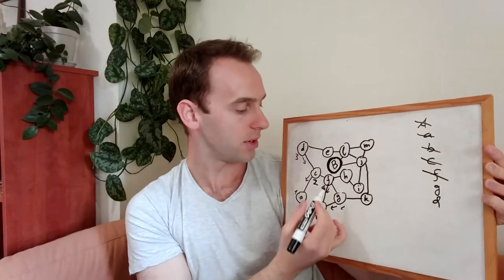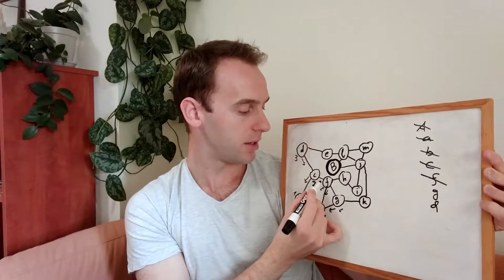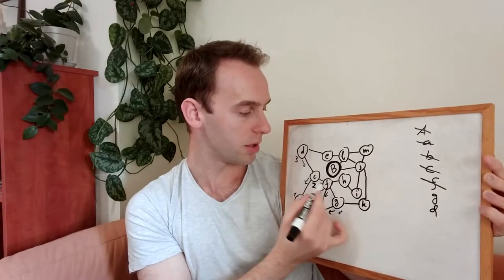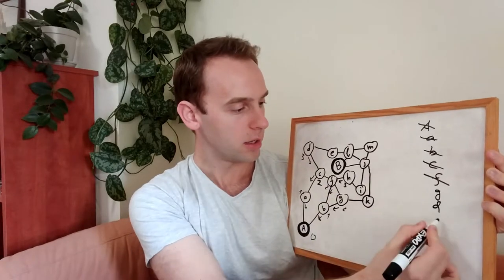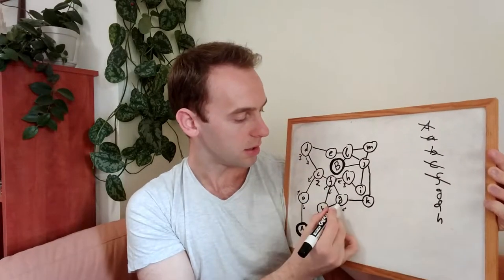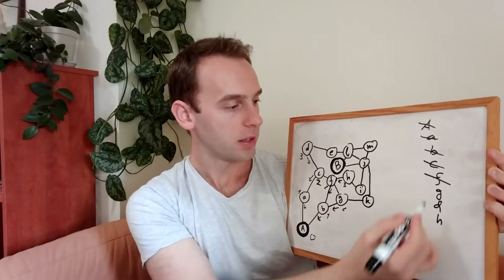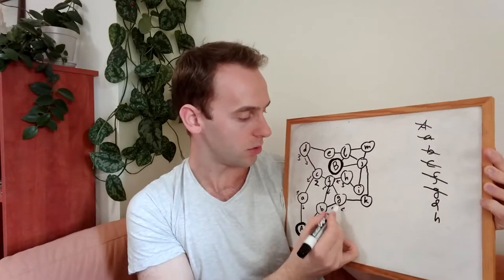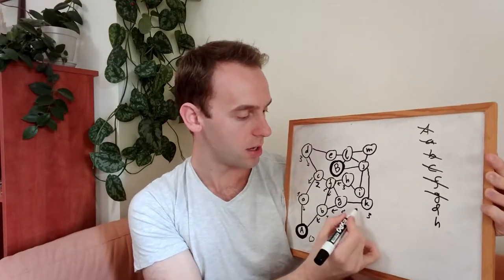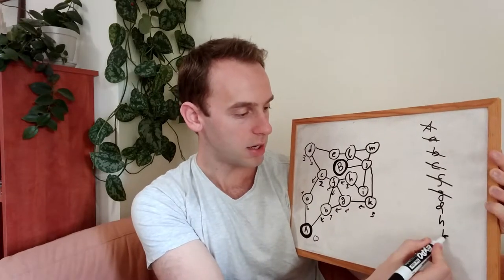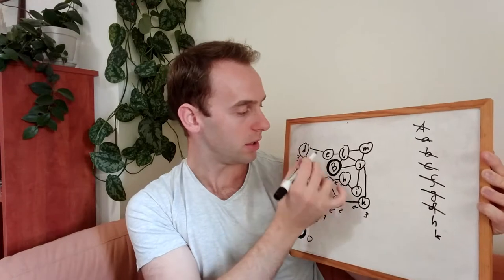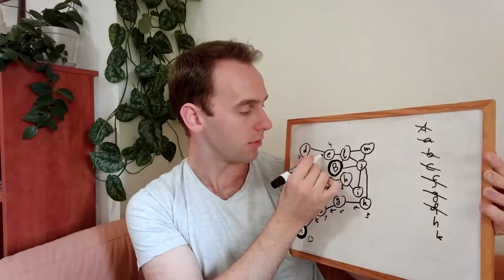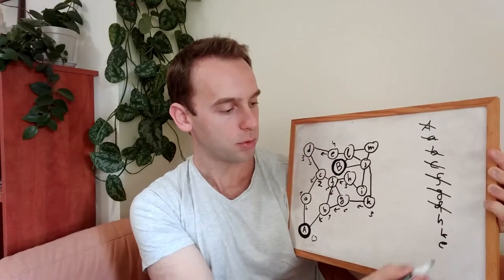Next node is F. And we will update the neighbors of F. This we already updated. This is going to be three. We arrived from here. And we update H. This node we already updated. Next node G. This updated. Three. Arrived from here. Put K here. Next node will be D. D is four from here. Let's put E here.